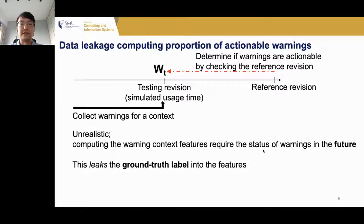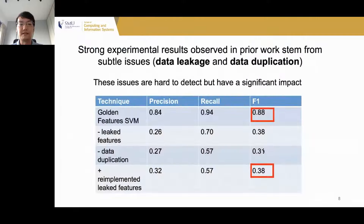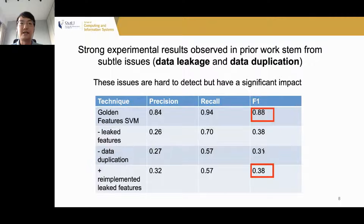We also find issues of data duplication. After addressing these issues and re-implementing the warning context features, we find that F1 drops from 0.88 to 0.38. In other words, the strong experimental results stem from very subtle issues of data leakage and data duplication. These issues were hard to detect but have a significant impact.